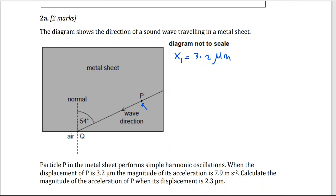And the magnitude of the acceleration, I'm going to call it A1. So X1 is 3.2, A1 is 7.9 meters per second squared. Calculate the magnitude of the acceleration at the same point when now the displacement X2 became 2.3 micrometers. I need to calculate A2.